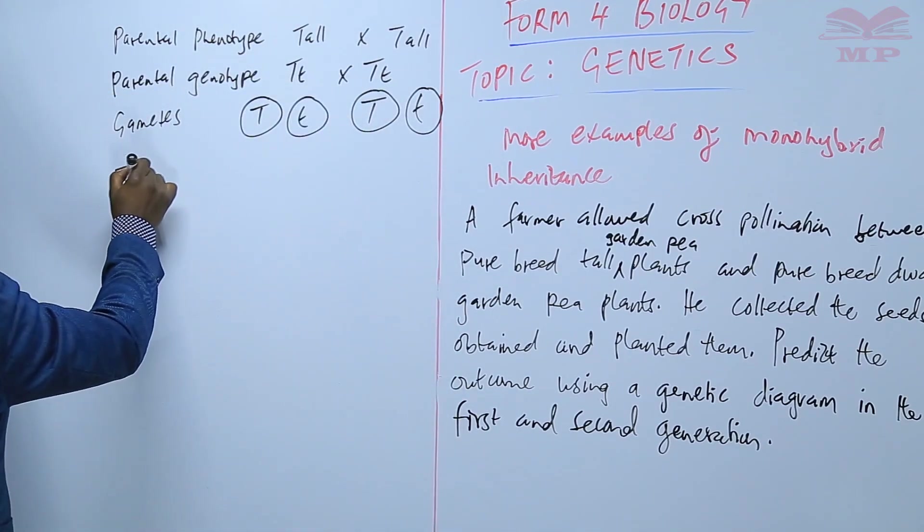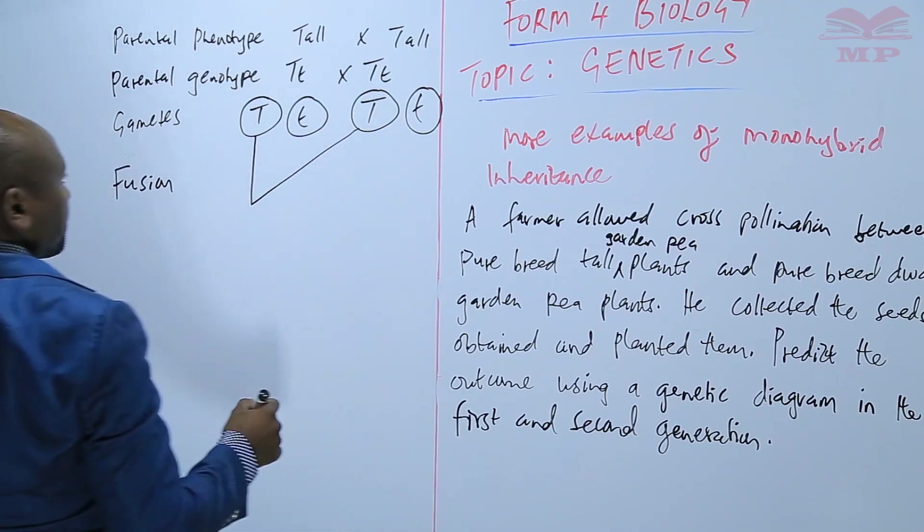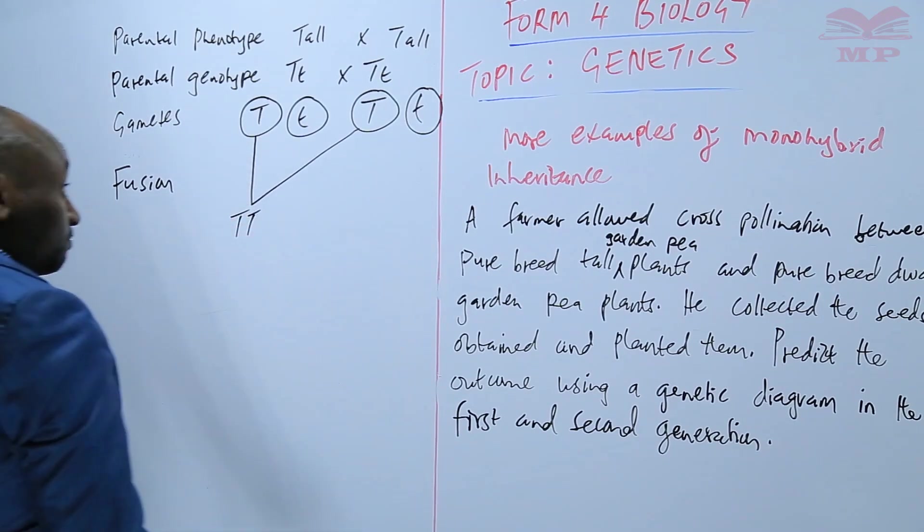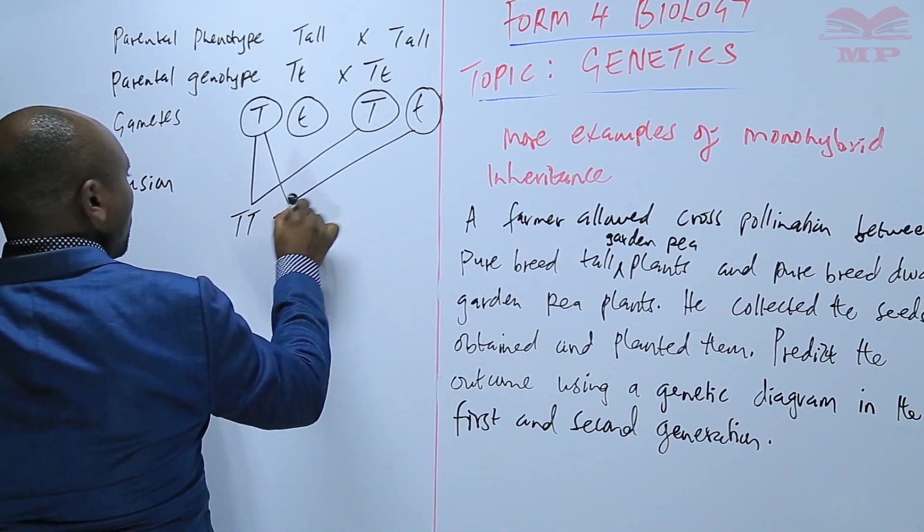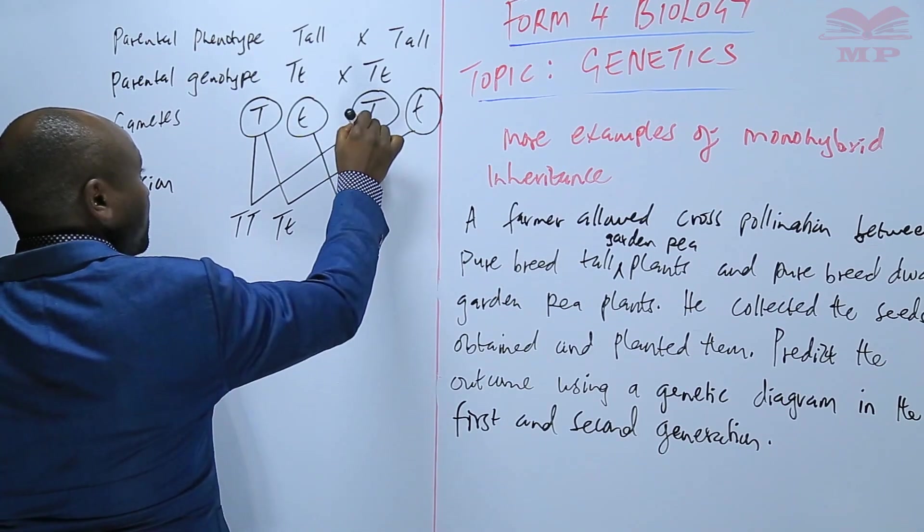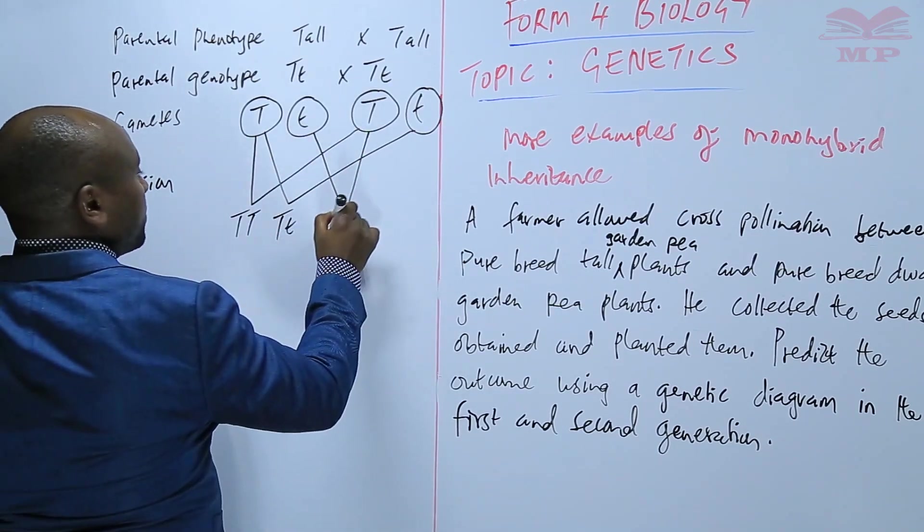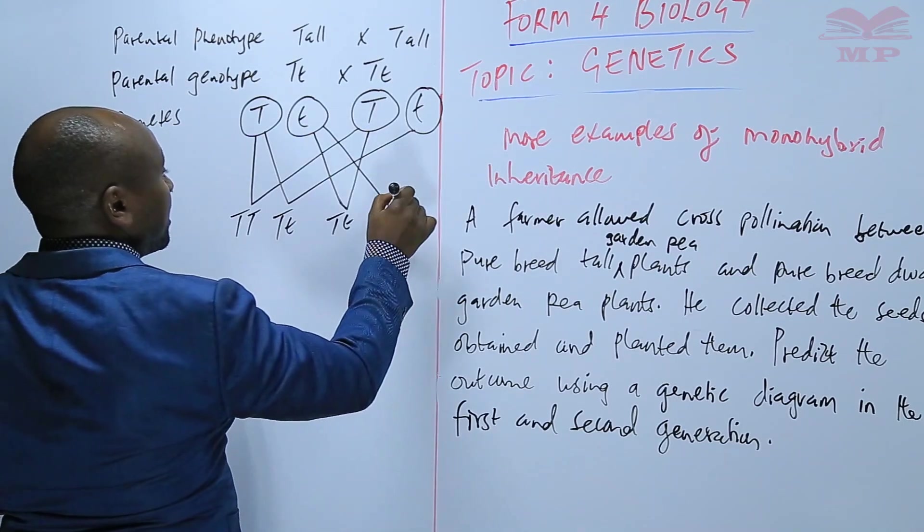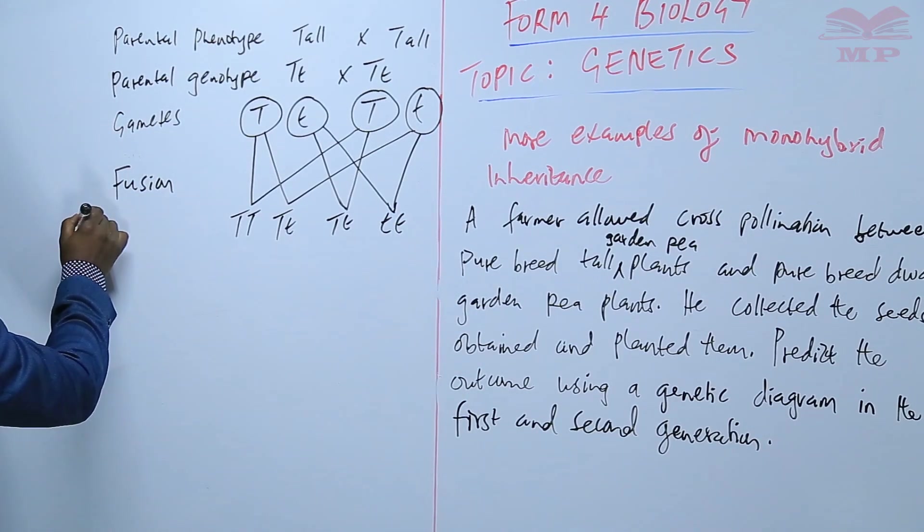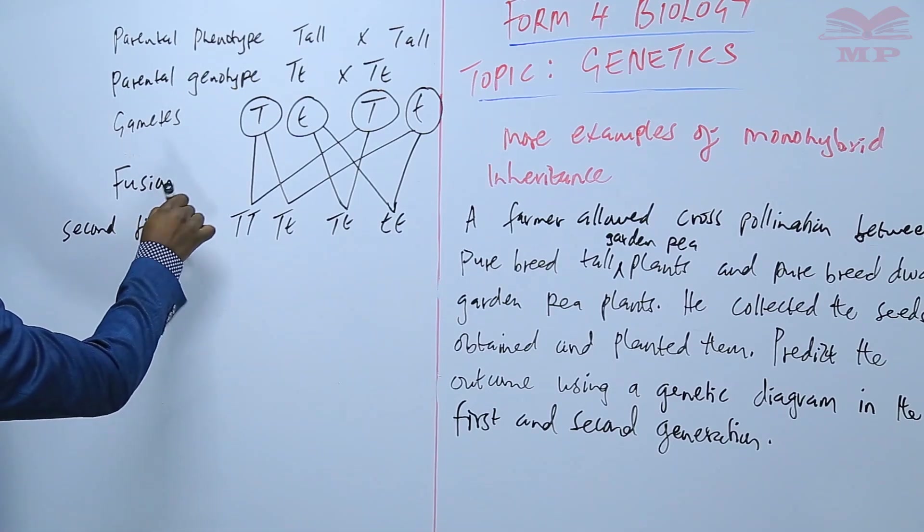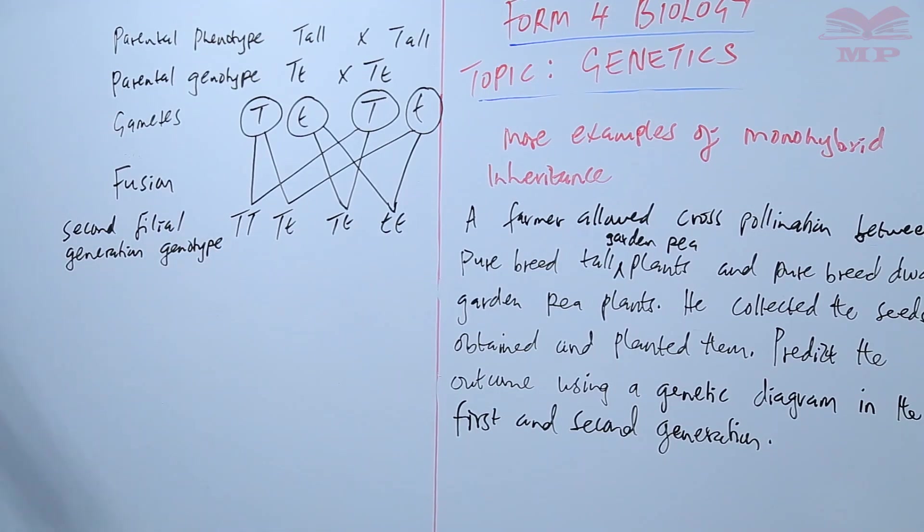Capital T, then we do the fusion. We have capital T capital T, capital T small t. Where there is capital and small we should always start with the capital, so capital T small t. Then finally we have small t small t.